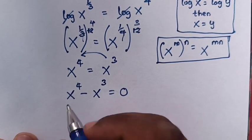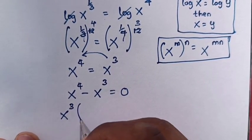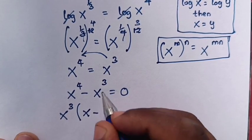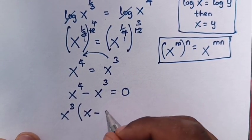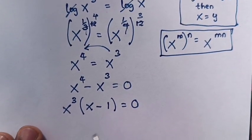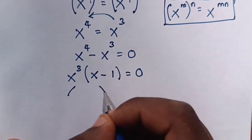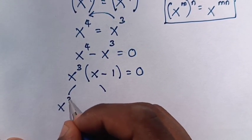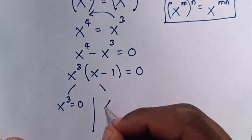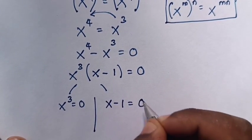Now here x power 3 is common. We factor x power 3 out of the bracket, giving x power 3 times (x minus 1) is equals to 0. We now have two cases: x power 3 is equals to 0, and x minus 1 is equals to 0.